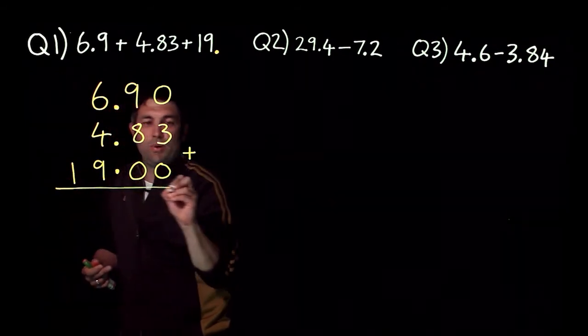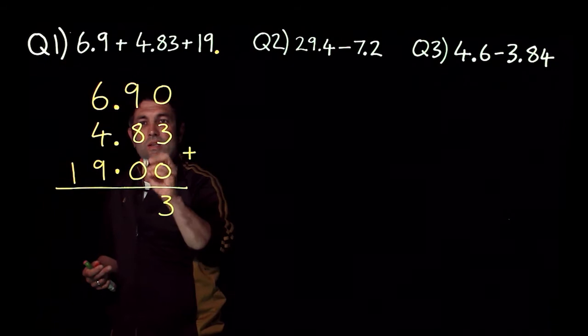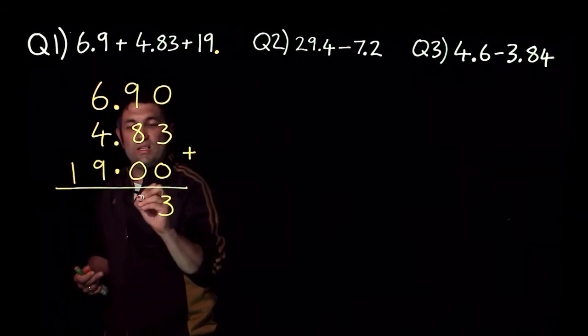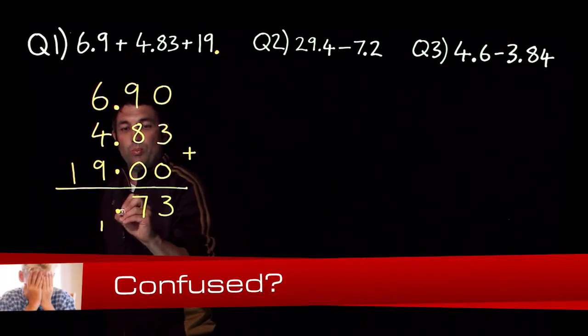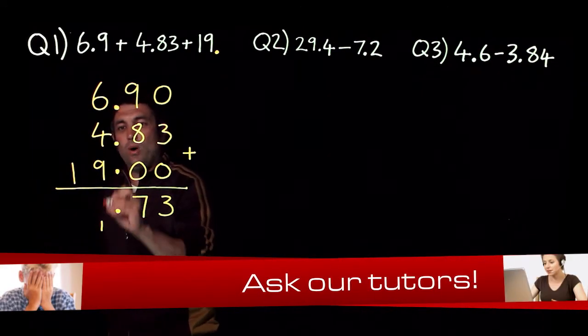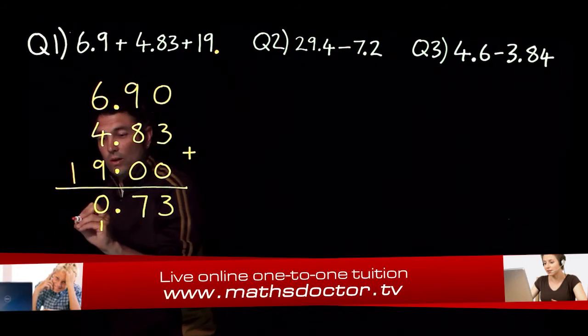So if I add those up, I get 0 add 3 add 0 gives me 3, 0 add 8 add 9 gives me 17 so I write the 7 there and I carry the 1. Don't forget to put the decimal point underneath in the same column. 1 add 9 add 4 add 6 is 20 so the 0 goes there, the 2 goes there,